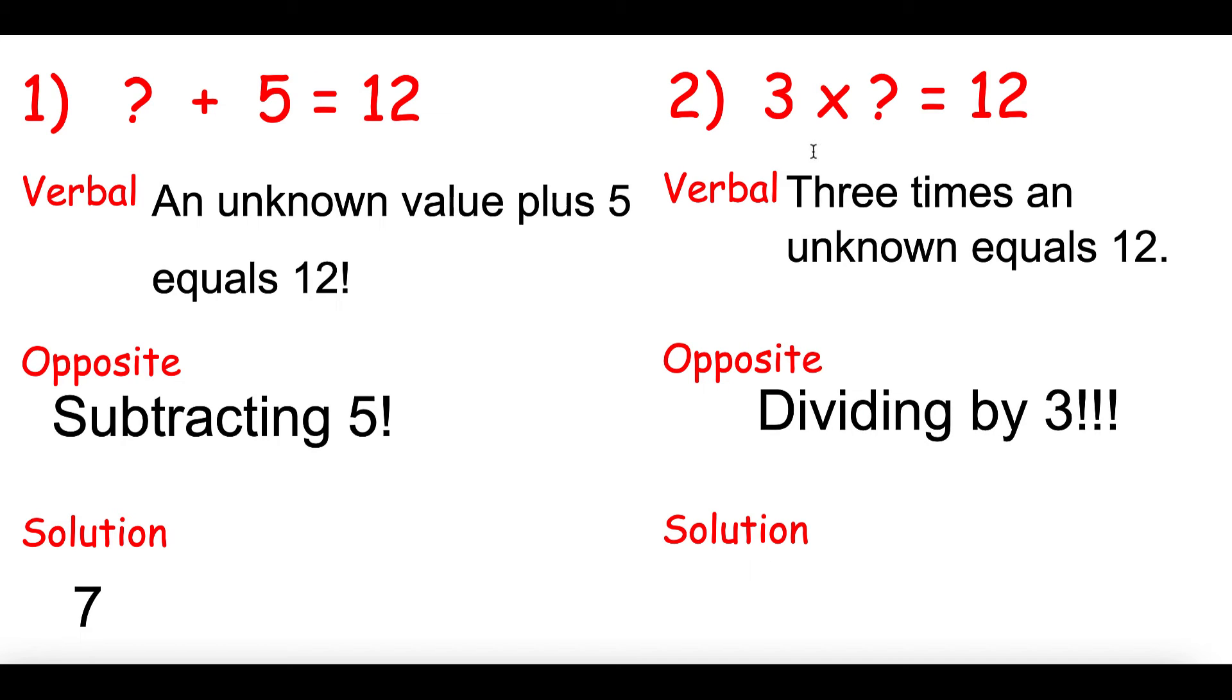The opposite of multiplying is dividing. And our solution, what number times three equals twelve? That's right. Four is that magic number.